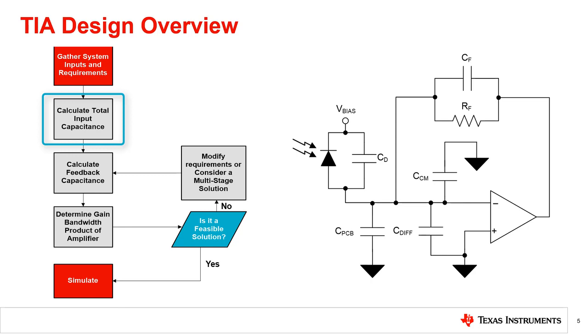Next, you will need to determine the total input capacitance to the TIA, including the photodiode capacitance, an estimation of the amplifier's common mode and differential input capacitance, and any stray capacitance contributed by the PCB. To compensate the effects of the input capacitance, the first step is to calculate the feedback capacitor that will stabilize the TIA circuit. Next is to take the results of the previous steps and use it to determine the minimum gain bandwidth product of the amplifier.